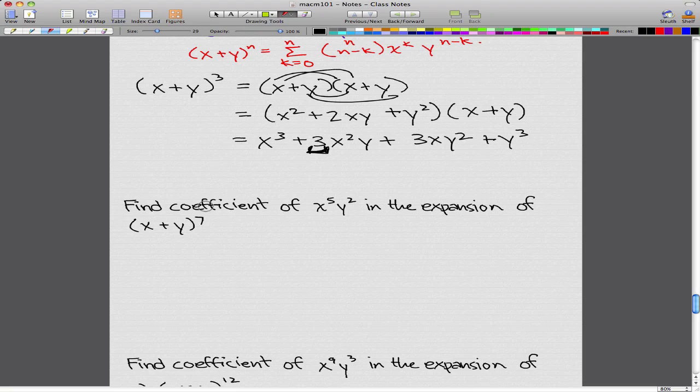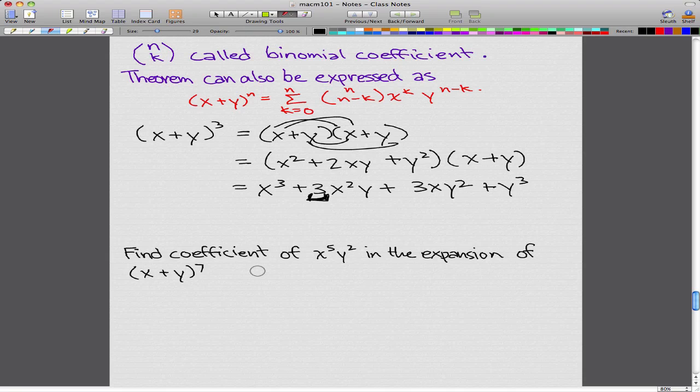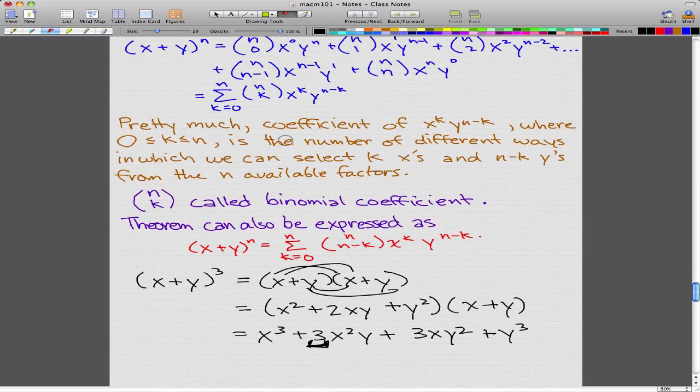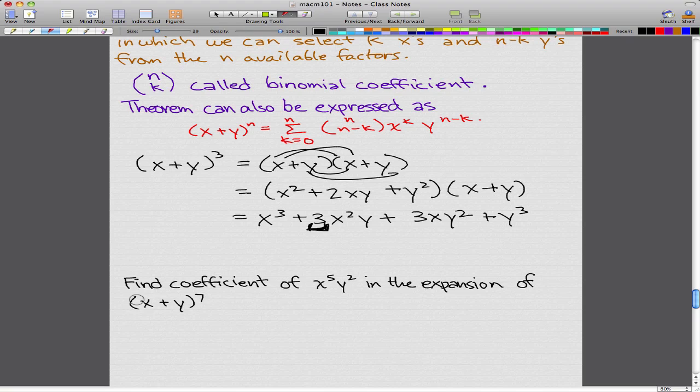Let's say, find the coefficient of x to the power of 5, y to the power of 2, in the expansion of x plus y to the power of 7. So, this is really simple. It's pretty much using this formula all over again. So, x plus y to the power of 7, well, 7 is actually our n. And, our k, we could say our k is 5.